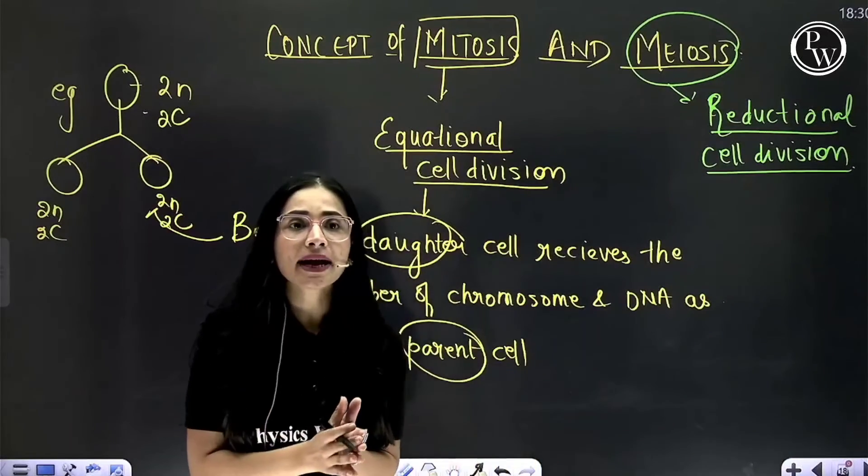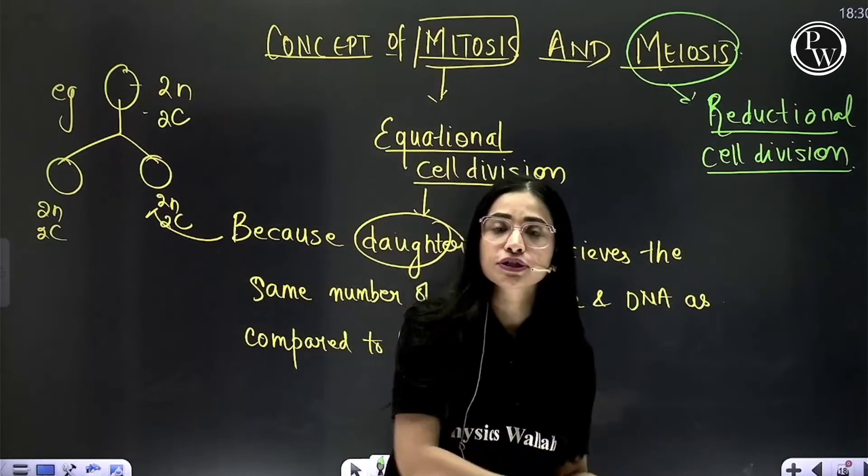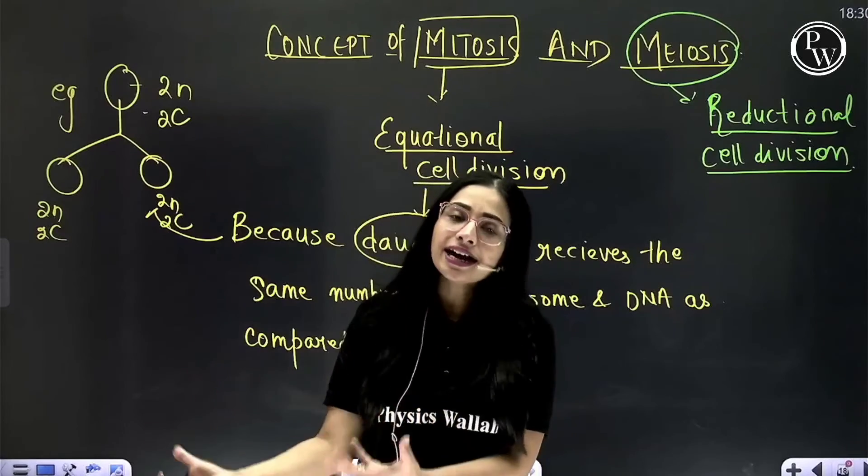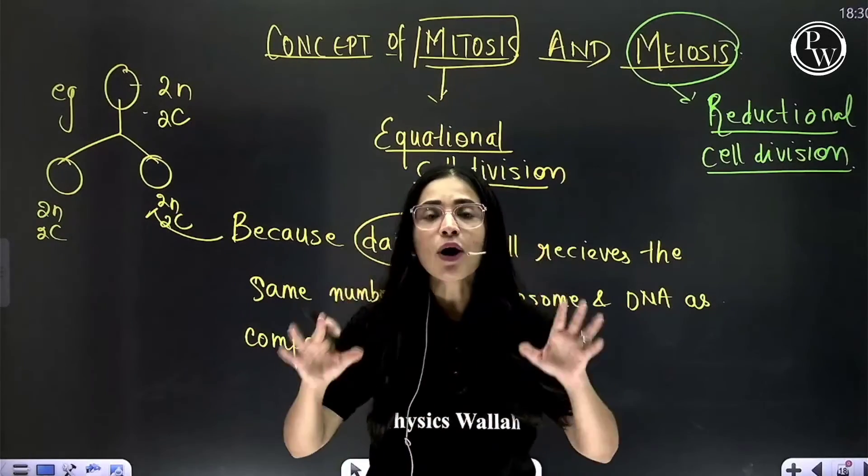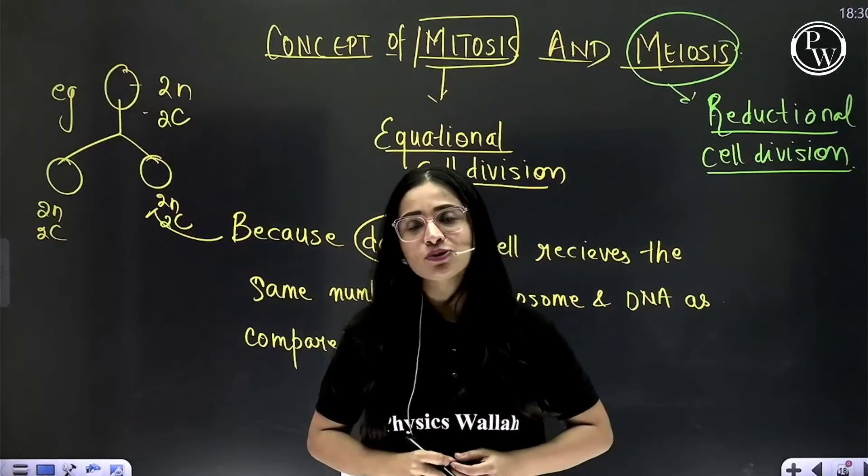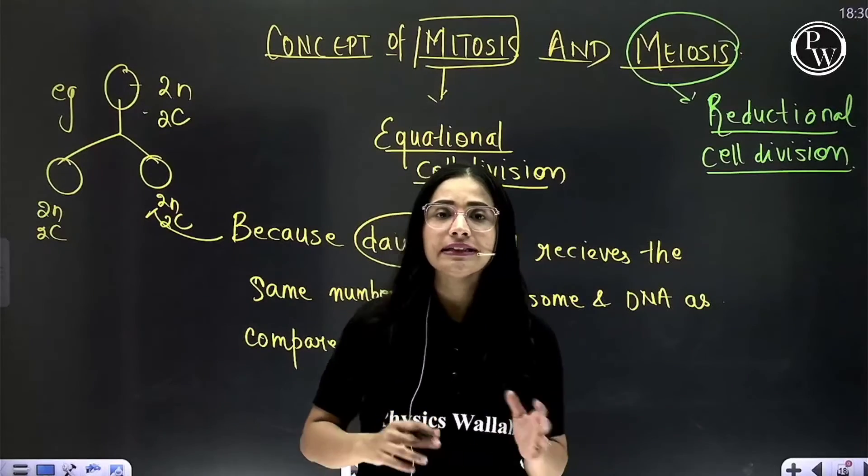Understood everyone? What is mitosis? Equational cell division. What is meiosis? Reductional cell division. And now, I don't think any of my students will ever get confused in these two terms.